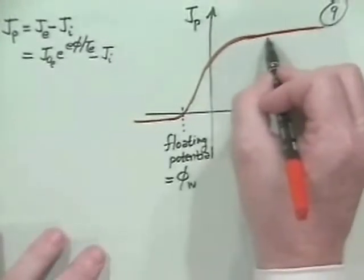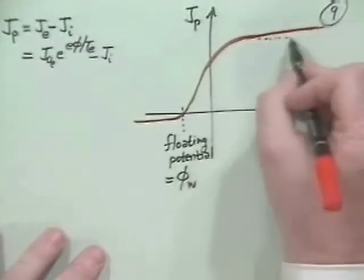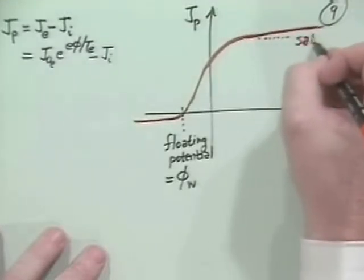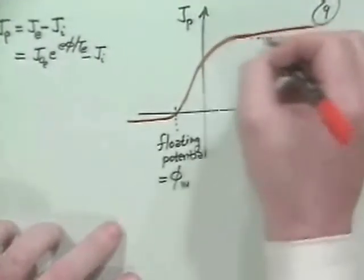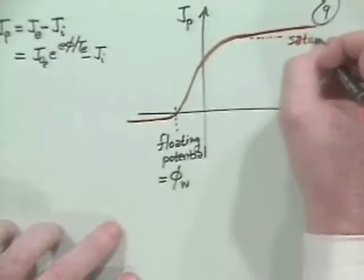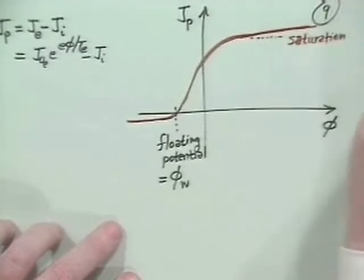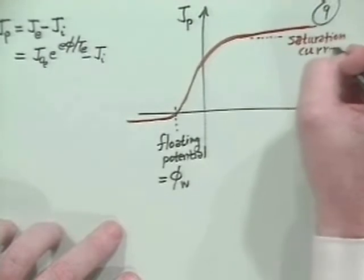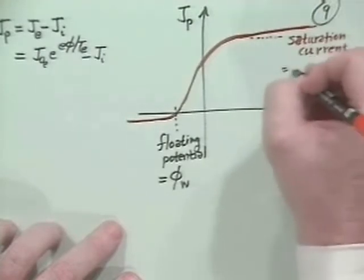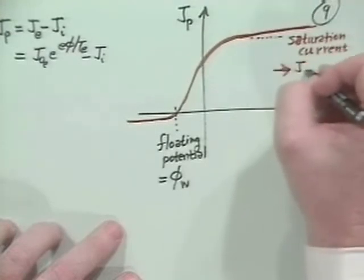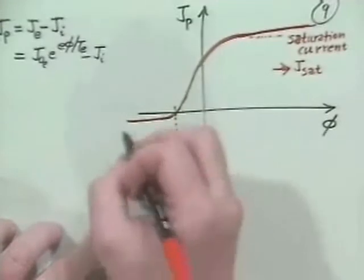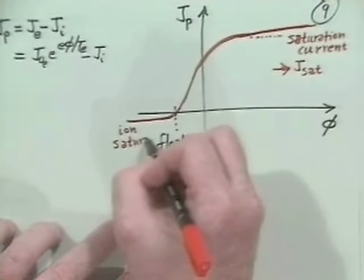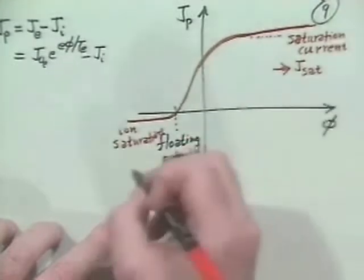This current up here is called the saturation current, which means that it saturates. It's got a little bit of a tilt to it, but very little. So, this is the saturation current. Or it's often referred to as J-sat, for J is the current. And this would then be the ion saturation current. This is really the electron saturation current.